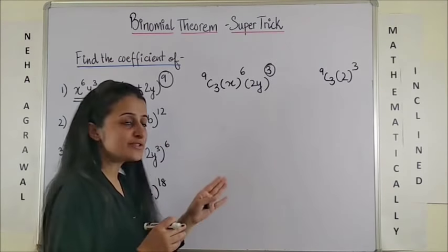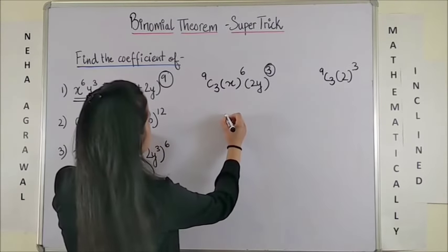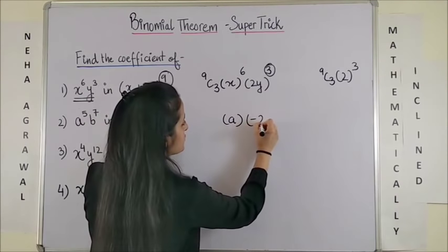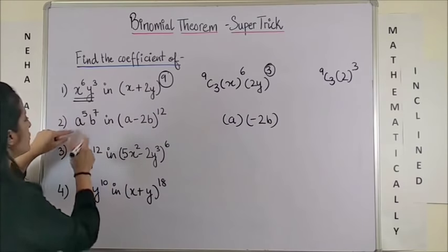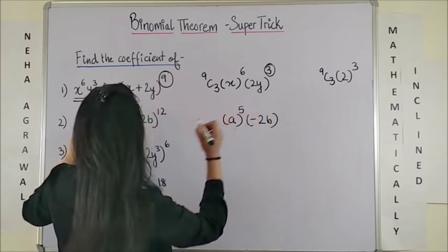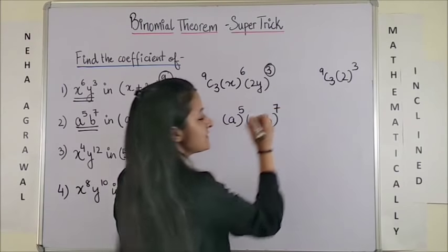Okay, moving to the second one. Let's just write whatever we have along with the sign. So we write a and we write minus 2b. Now, you know you have to find a raised to power 5. So I raise it to the power 5 and b raised to power 7. I raise it to the power 7.